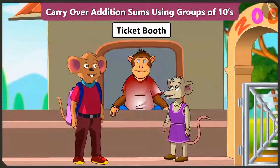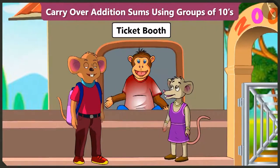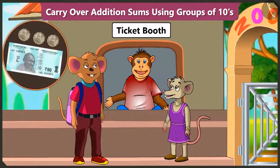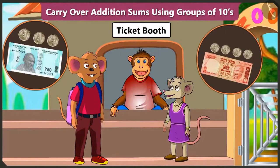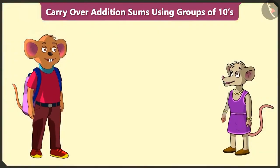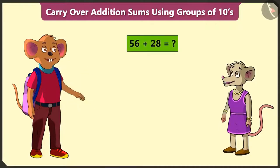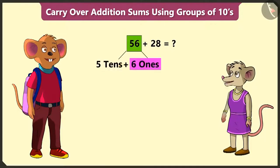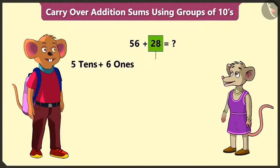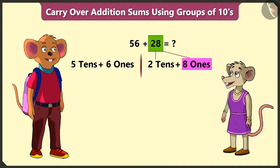Do we have to buy a ticket here also? Yes. Bhaiya, please give us 2 tickets. Your ticket will cost 56 rupees and the younger child's ticket will cost 28 rupees. Chichi, now tell me how much money do we have to pay in total? 56 is 5 tens and 6 ones, and 28 is 2 tens and 8 ones.